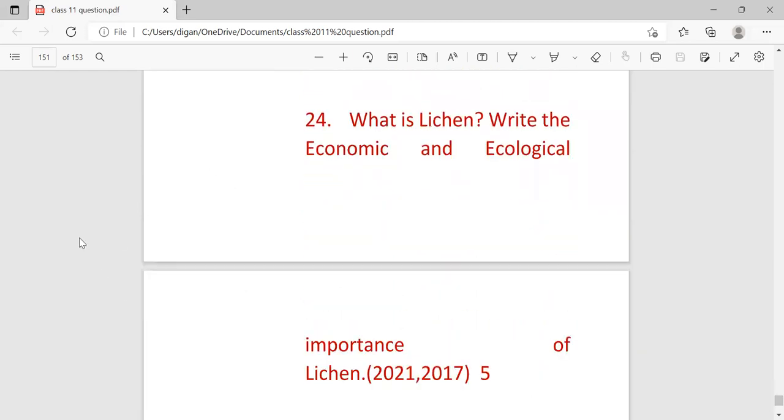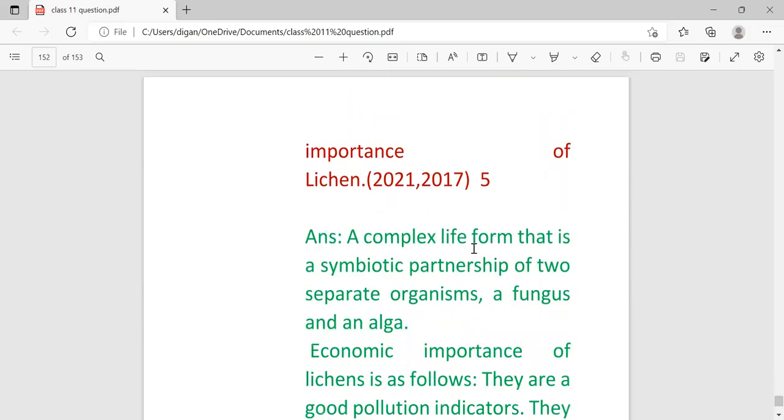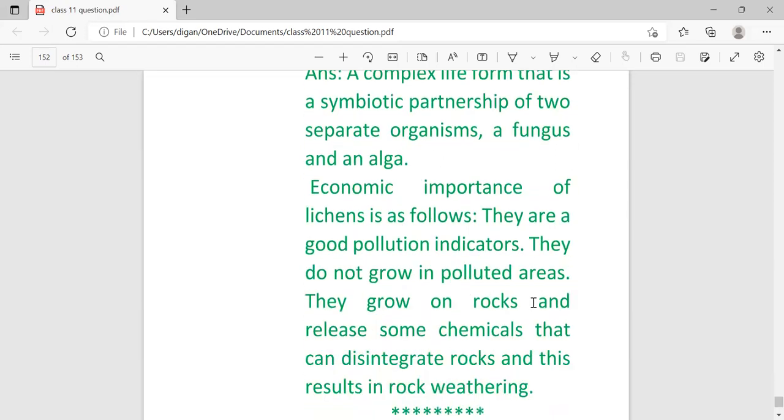What is lichen? Write the economical and ecological importance of lichen. A lichen is a complex life form that is a symbiotic partnership between two separate organisms, fungus and algae. When algae and fungi combine, they form a particular organism known as lichen. Economic importance of lichen: They are good pollution indicators. They don't grow in polluted areas. They grow on rocks and release some chemicals that can degenerate rocks, and this results in rock weathering.